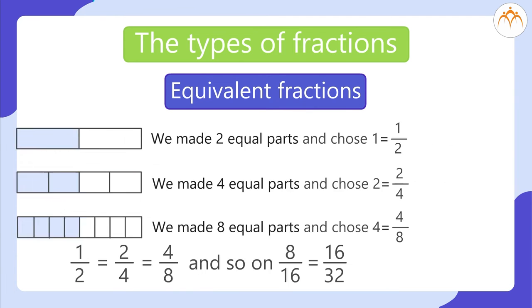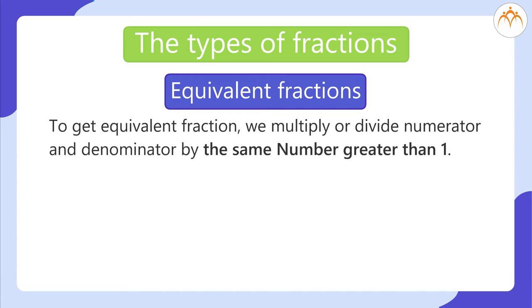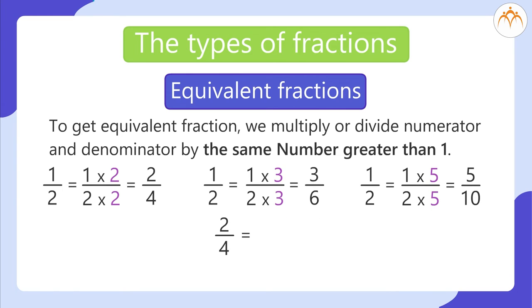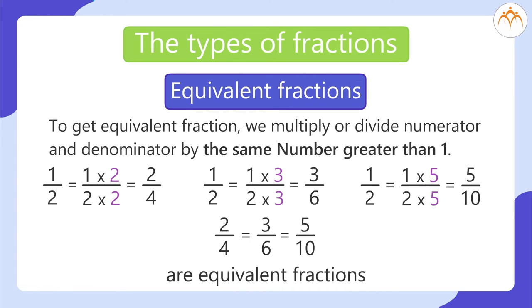How do we get equivalent fractions? To get an equivalent fraction, we multiply or divide both the numerator and the denominator by the same number greater than 1. For example: 1/2 = (1×2)/(2×2) = 2/4; 1/2 = (1×3)/(2×3) = 3/6; 1/2 = (1×5)/(2×5) = 5/10. So 2/4, 3/6, and 5/10 are all equivalent fractions.